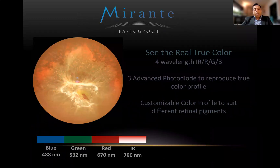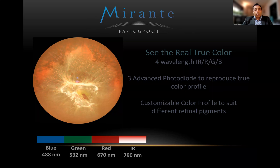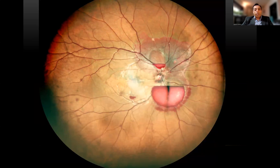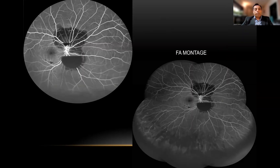The most important thing that attracts me to the Mirante is the four lasers, which give you the colors in a wide-field or a normal color image. The most true colors I've seen with an SLO-based imaging is with Mirante, and you can appreciate almost natural-looking images. Even in the wide field, it's a great screening tool to do color photographs in patients of various types of pathologies.